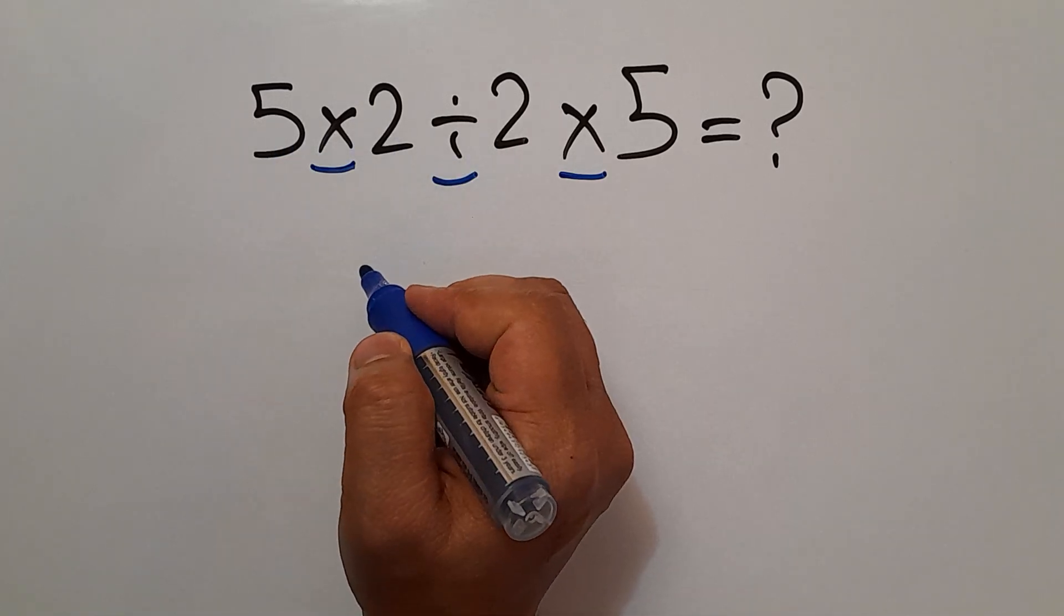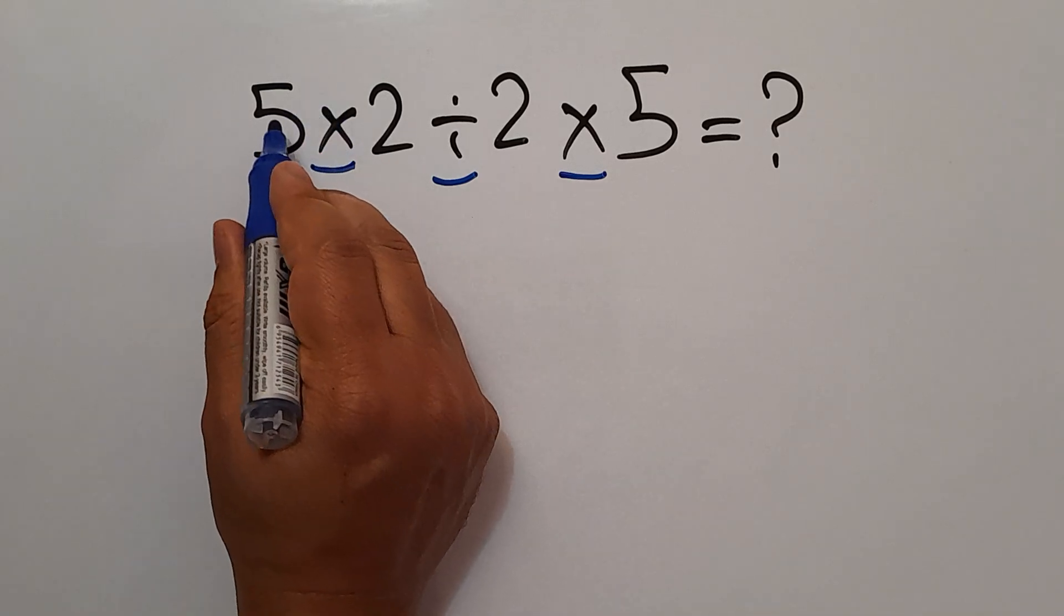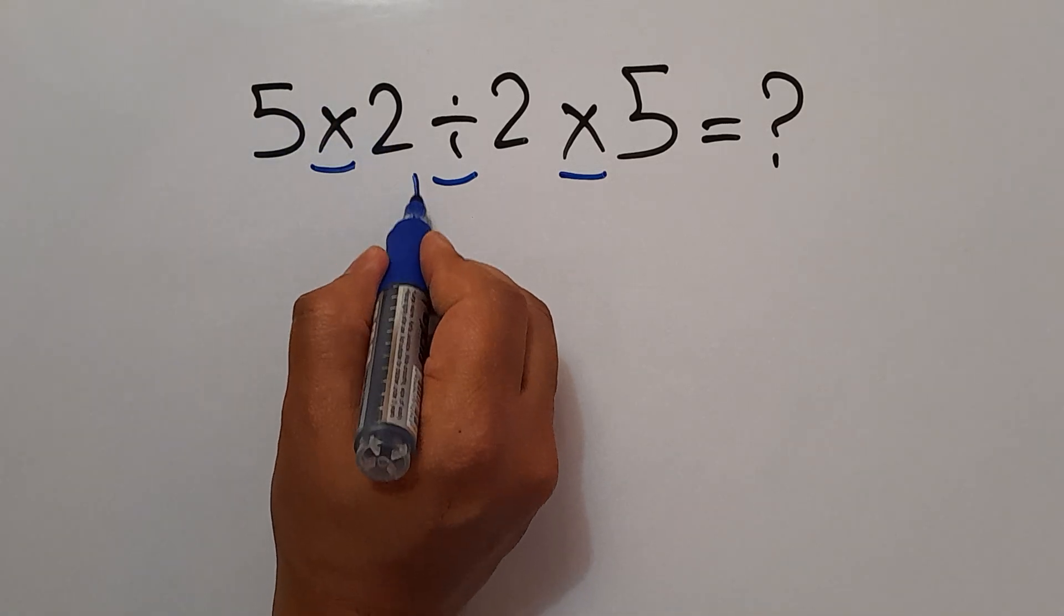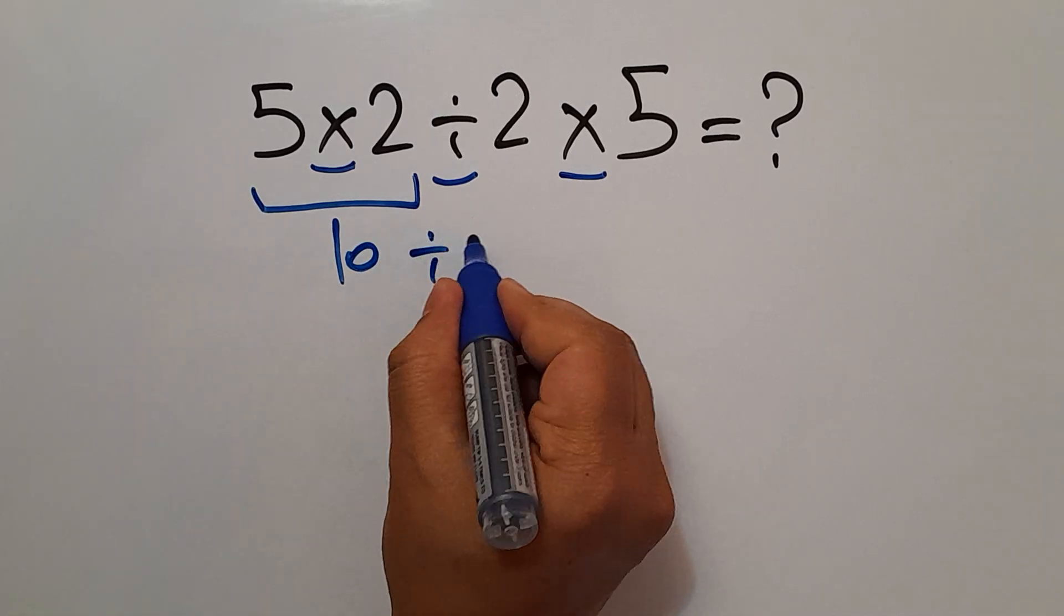So first we do this multiplication: 5 times 2 equals 10. So 10 divided by 2 times 5.